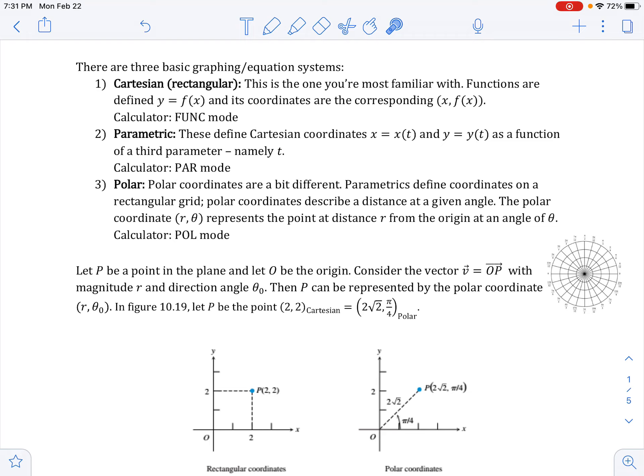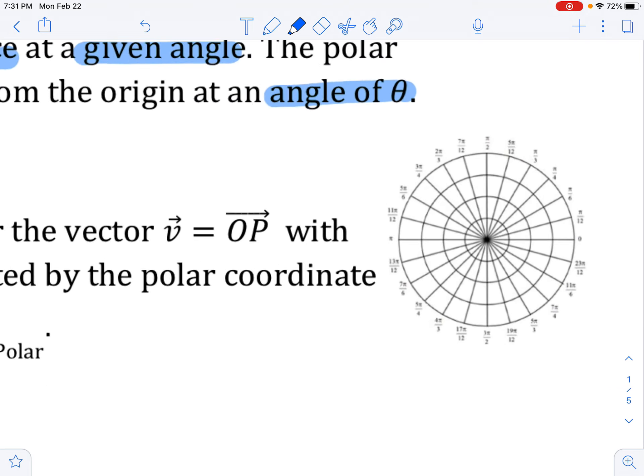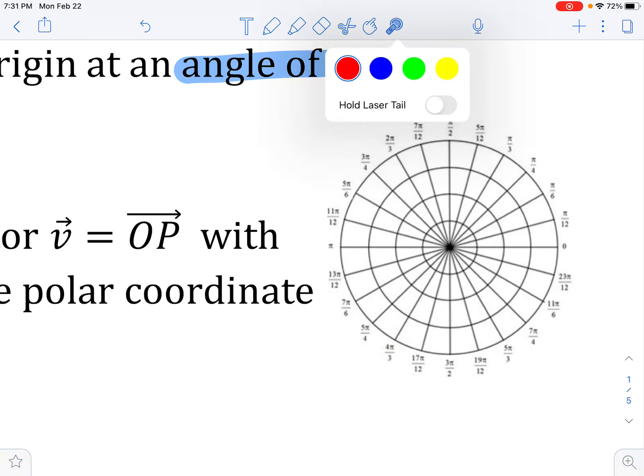Now we're going to look at polar functions, and polar coordinates are actually quite different in how they're defined. While parametrics define coordinates on the rectangular grid, polar coordinates describe a distance at a given angle. So the polar coordinates are in r, theta, and it's a distance r from an origin at an angle of theta, and you use polar mode. Instead of our x, y grid, a polar grid will look something more like this.